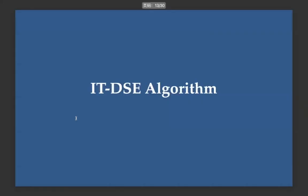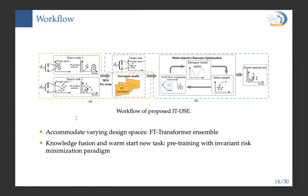Here comes our ITDSE algorithm. In the yellow block of the workflow, source task 1 and source task 2, featuring search dimensions d1 and d2 respectively, are employed to train surrogate models. To accommodate varying design spaces, the FT transformer architecture is adopted as the surrogate model for robust feature extraction and uncertainty estimation. The invariant risk minimization paradigm is then employed to warm-start a new task via knowledge fusion. In the blue block, the pre-trained surrogate model is utilized for Pareto optimal set selection on the target task using a multi-objective Bayesian optimization method.